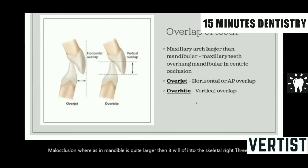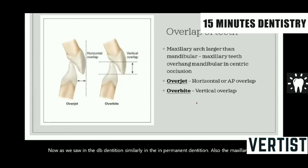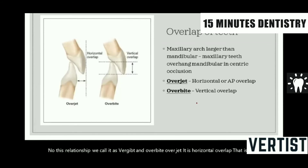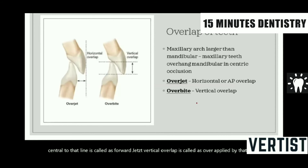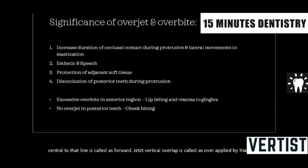Another relationship which is important to understand is the overlap of the teeth. In the permanent dentition also, the maxillary arch overhangs the mandibular arch. This relationship we call overjet and overbite. Overjet is horizontal overlap — if you draw a line along the labial aspect of the upper central, the distance from the lower central to that line is called overjet. Vertical overlap is called overbite — how much the maxillary teeth are covering the mandibular teeth.